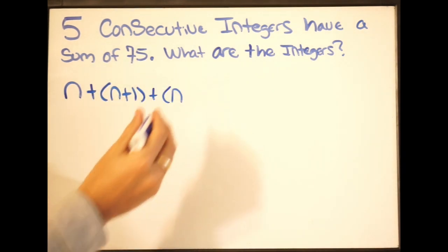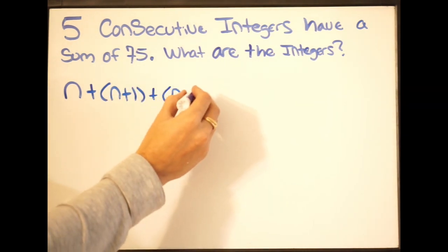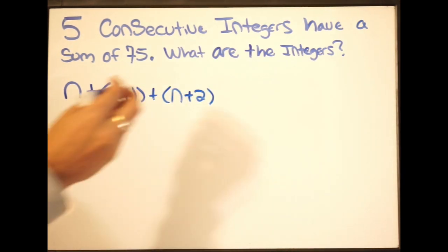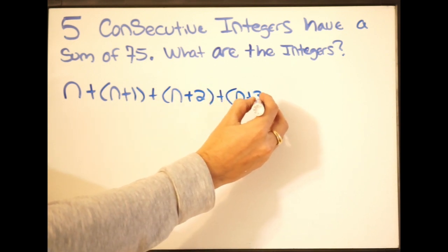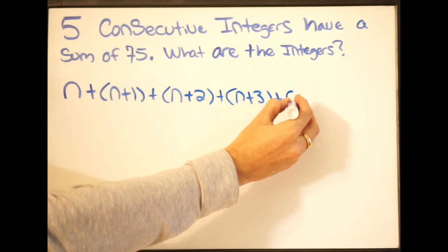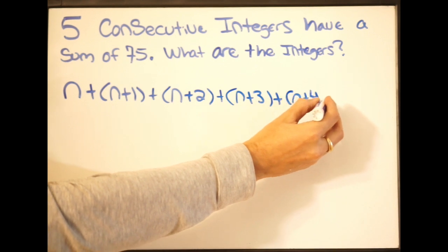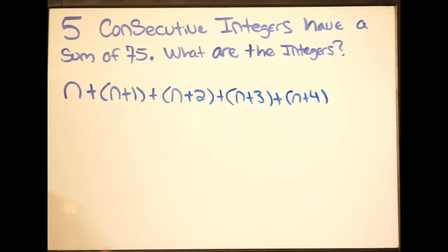Plus n. Now instead of plus 1, we're going to do plus 2. Remember, it's consecutive. And then plus, this will be n plus 3. And then plus n plus 4. And this is all going to be equal to 75.